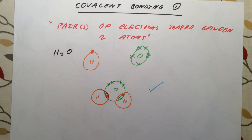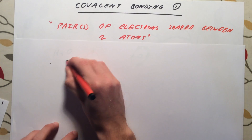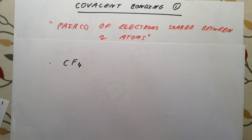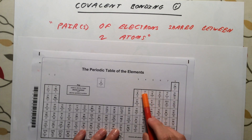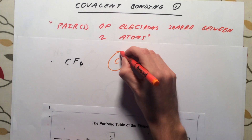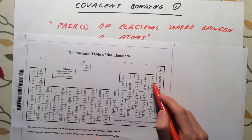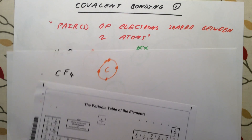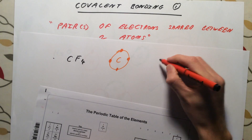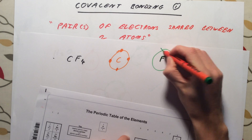The second example, which is a bit trickier, is the dot and cross diagram for CF₄ — one you could be asked in your exam. I start off by drawing my carbon atom. Carbon is in group 4 in the periodic table; it has 6 electrons in total and 4 in the outer shell. Fluorine is in group 7; it has 2 electrons in its first shell and 7 in its outer shell, so I draw a fluorine with 7 electrons in its outer shell.